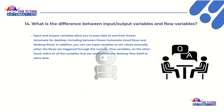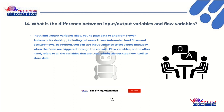Input and output variables allow you to pass data to and from Power Automate for desktop, including between Power Automate Cloud Flows and Desktop Flows. In addition, you can use input variables to set values manually when the flows are triggered through the console.